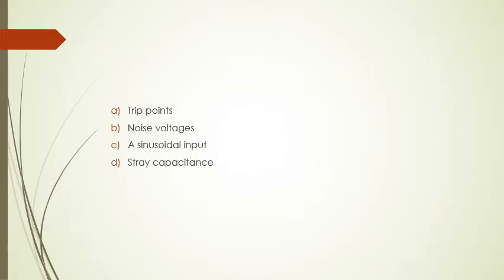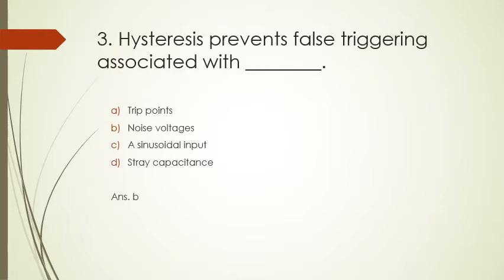The next question is: hysteresis prevents false triggering associated with blank. The false triggering associated with noise voltages is prevented by the hysteresis of the op-amp.